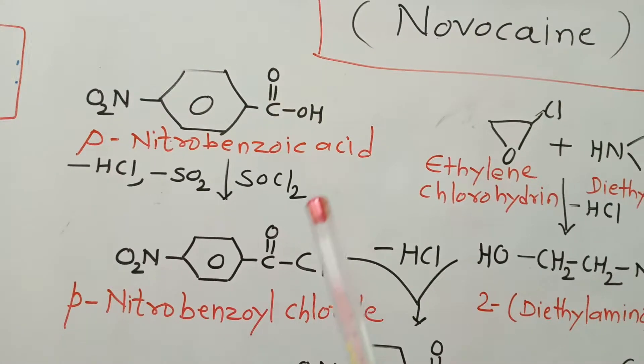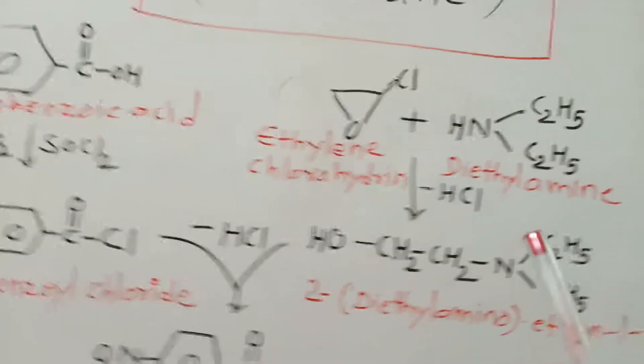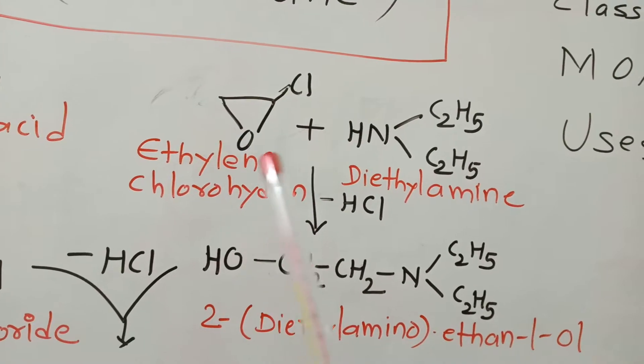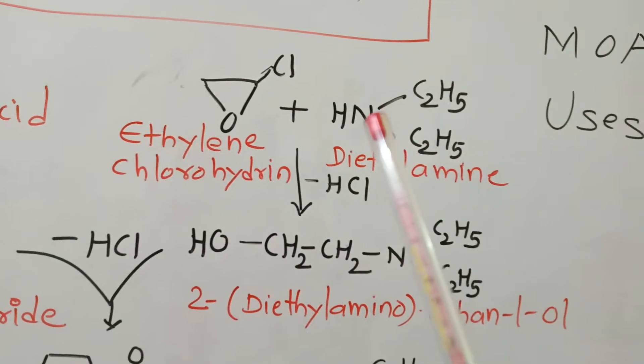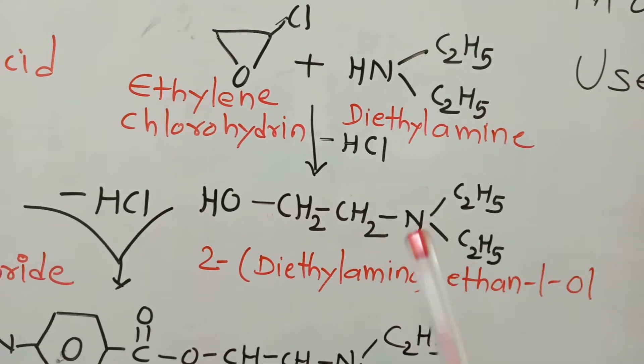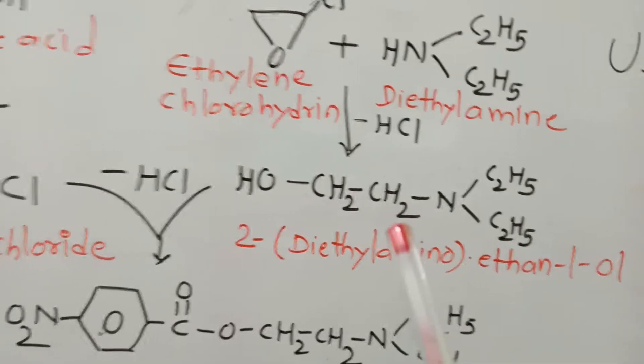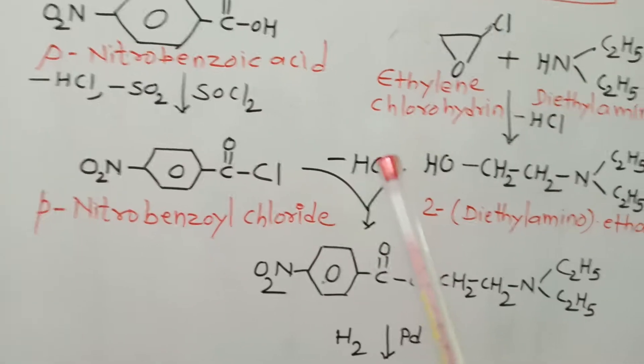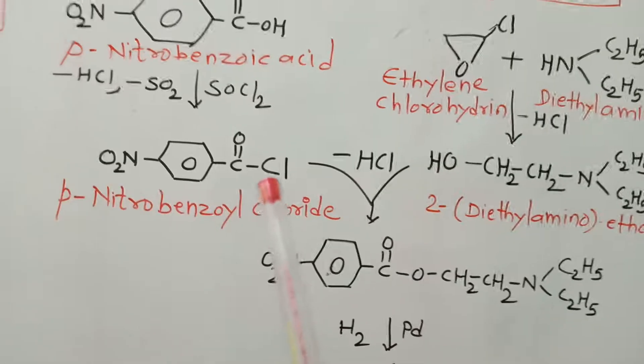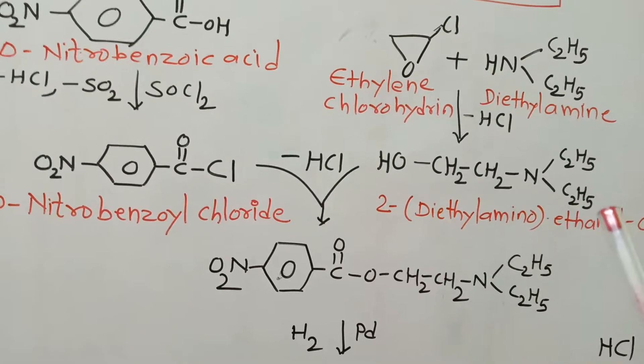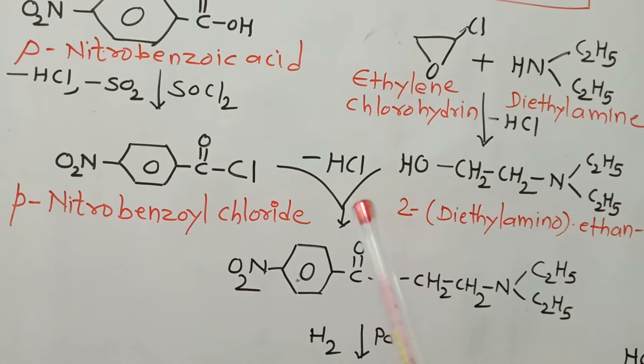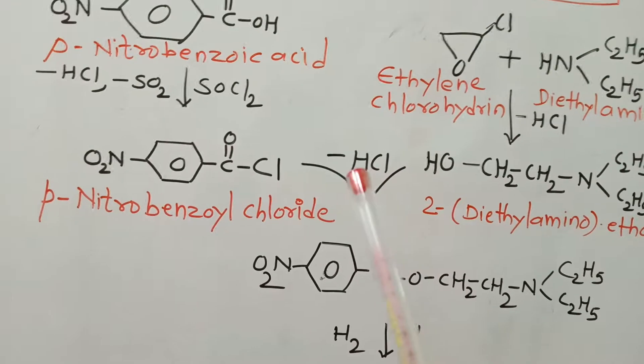The second part involves the reaction between ethylene chlorohydrin and diethylamine, which gives formation of 2-diethylamino ethanol. The compounds obtained in both steps - the para-nitrobenzoyl chloride and the ethanol derivative - undergo a typical reaction in presence of a base.